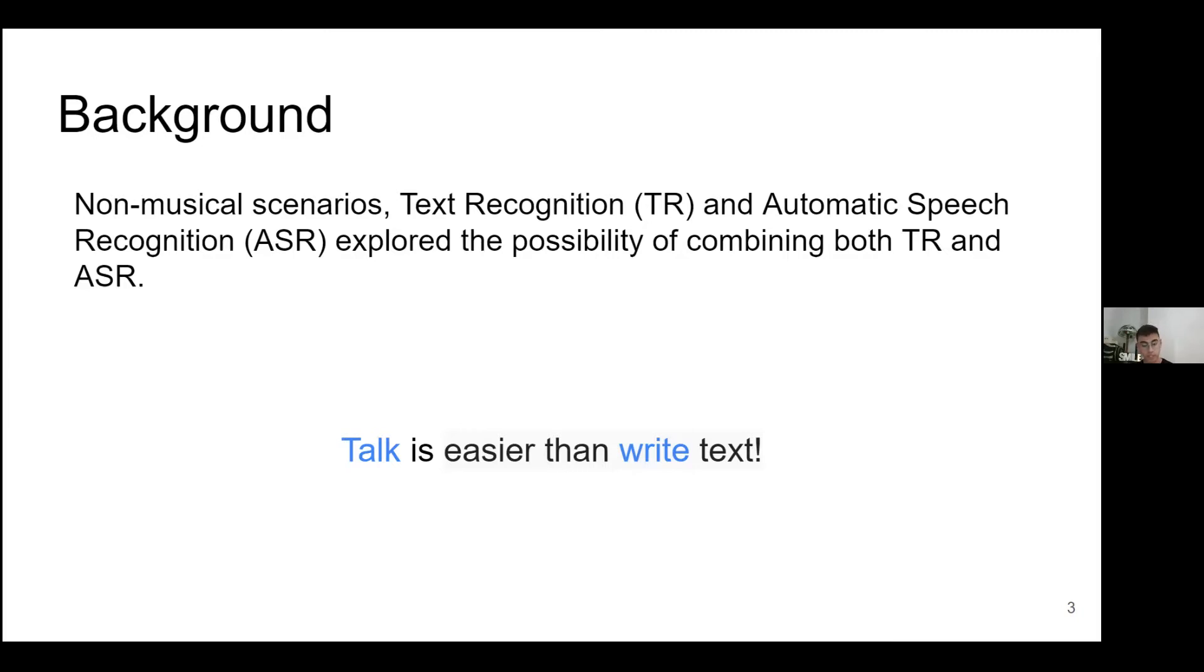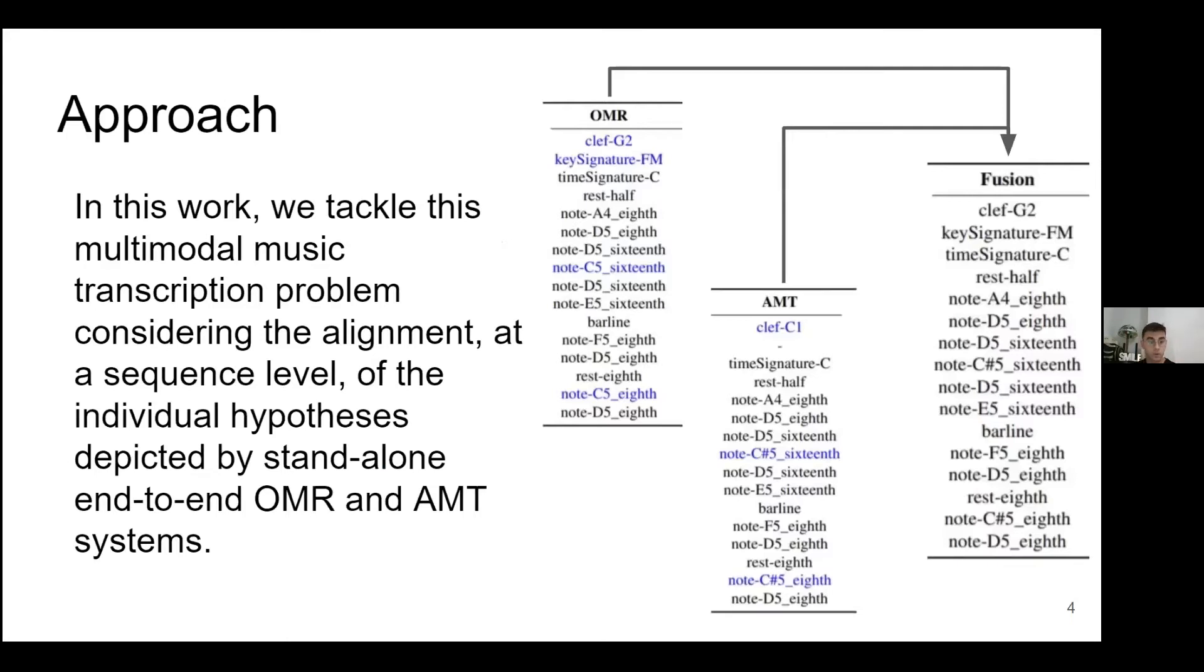With this idea and the fact that previous studies show that OMR is good at predicting the tokens that can be inferred from the sheet music image, like the key, the clef, and the bar line. And on the other hand, AMT is good at predicting the frequencies of notes.